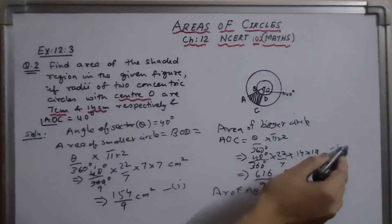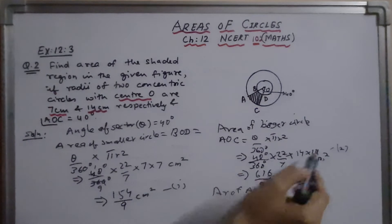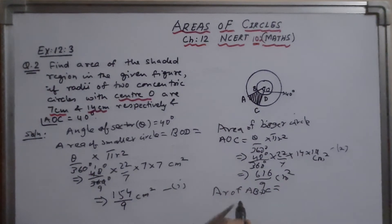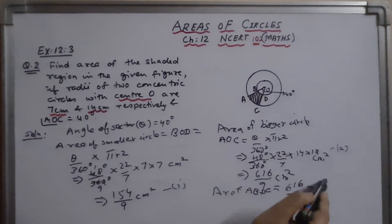So bigger circle is equation 2. Bigger circle is 616 upon 9 minus 154 upon 9.